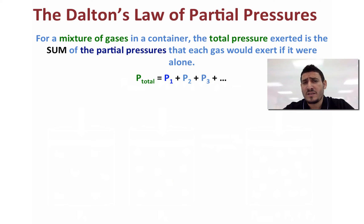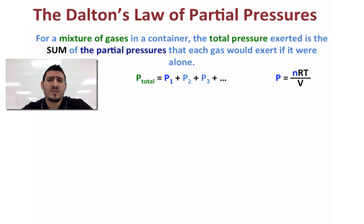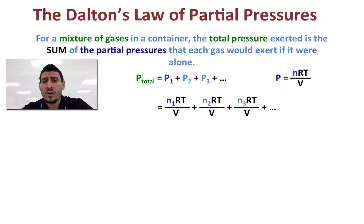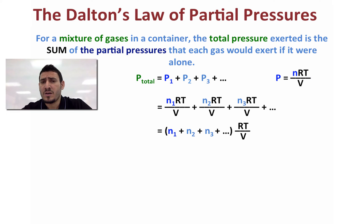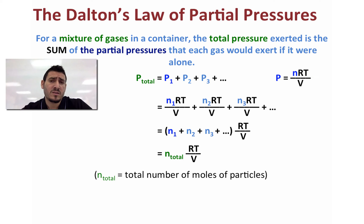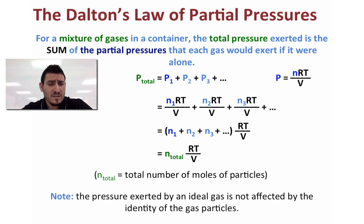Using the ideal gas law, P = nRT/V, we can replace each partial pressure with its expression: P1 = n1RT/V, P2 = n2RT/V, and so forth. The volume and temperature remain constant since all gases share the same container and temperature. Factoring out RT/V gives P_total = (n1 + n2 + n3) × RT/V, meaning total pressure equals the total number of moles times RT/V. This shows that the pressure exerted by an ideal gas is not affected by the identity of the gas particles.